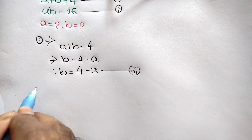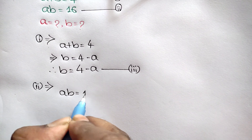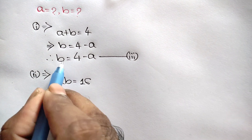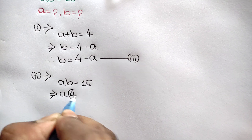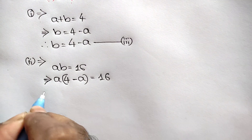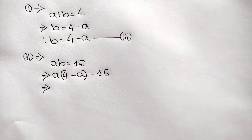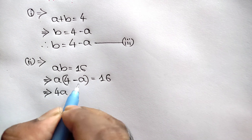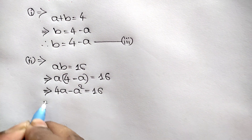From equation 2 we have ab is equal to 16. Substituting b equals 4 minus a from equation 3, we get a times (4 minus a) is equal to 16. Opening the bracket: 4a minus a squared is equal to 16.